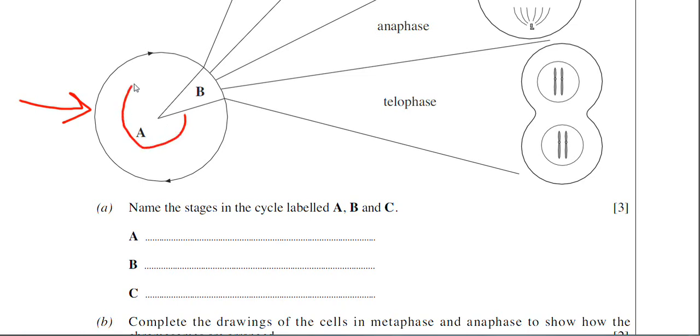Part A, notice the arrows there, the direction of the cell cycle. I've mentioned that in the notes. So you've got a rather large section there which is labeled section A. You should be able to label what section A is.